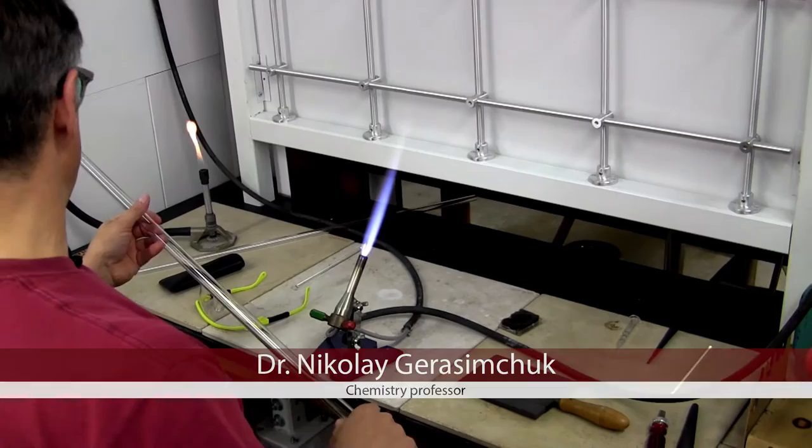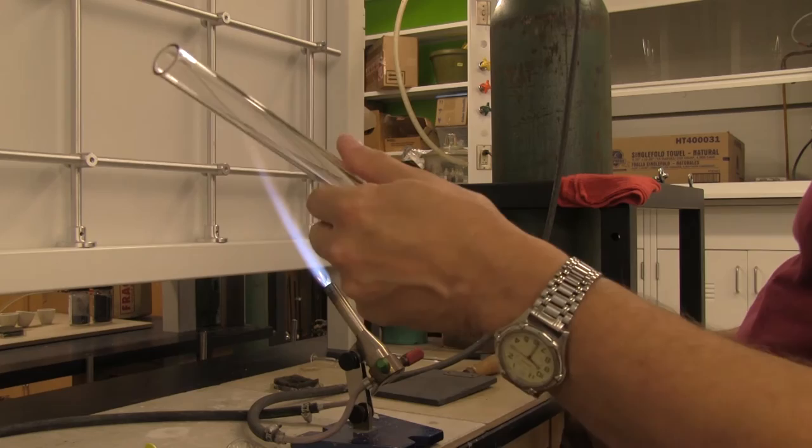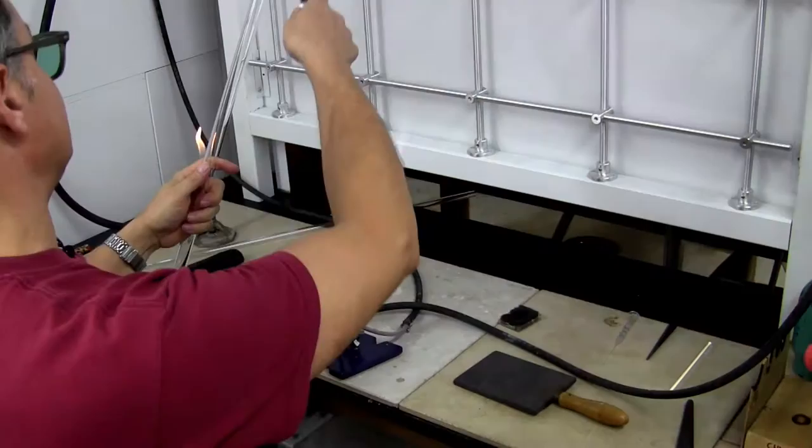In order to make ampoules, you have to start with a glass blank, which is just a pipe. Glass was made by fire and can be treated and cut by fire. That is how it's done.